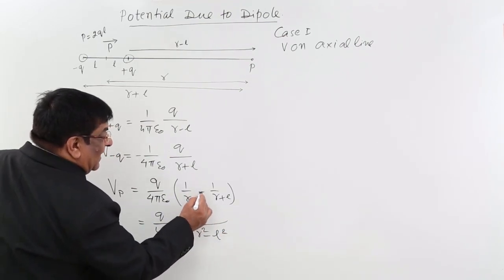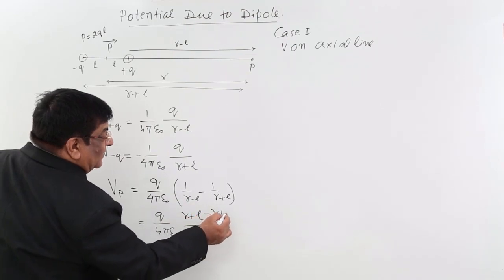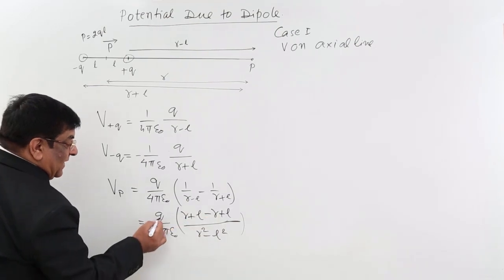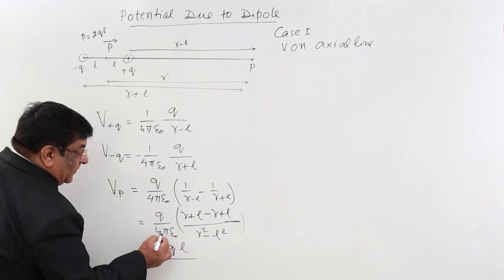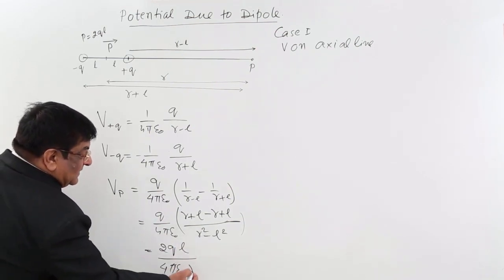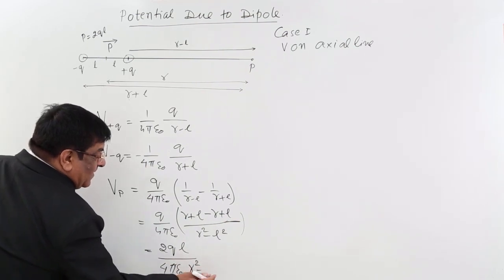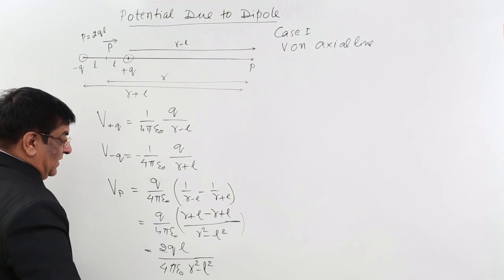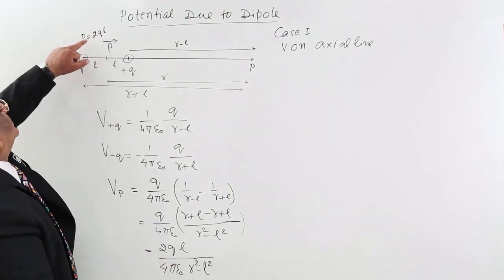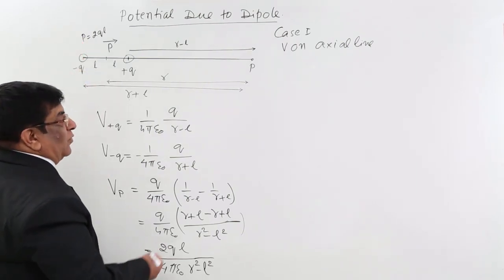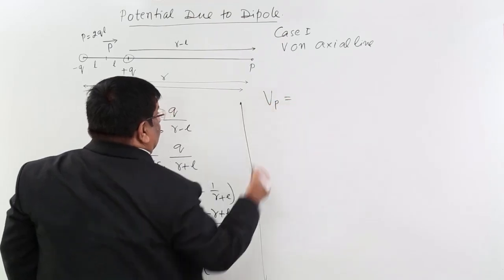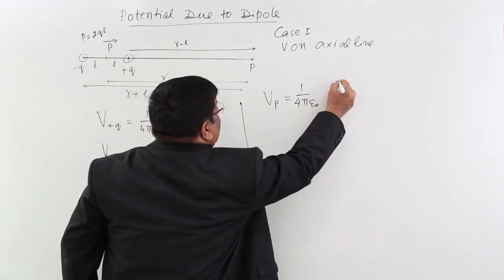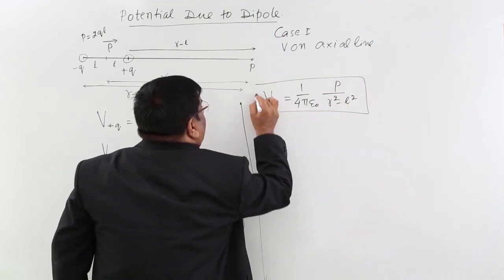The numerator from combining the fractions is (R + L) − (R − L), which gives R + L − R + L. The R terms cancel, leaving 2L. So the result is Q/(4πε₀) × 2L/(R² − L²). Since 2QL equals the dipole moment P, we can replace 2QL with P. Therefore, the potential at point P on the axial line is (1/4πε₀) × P/(R² − L²).